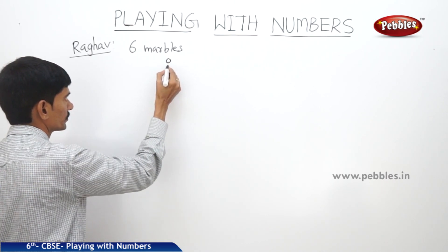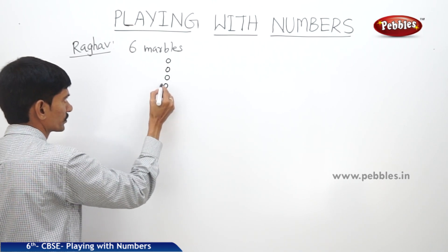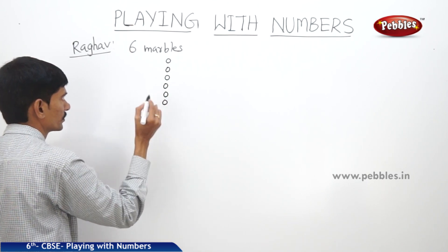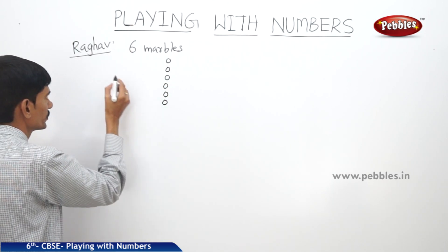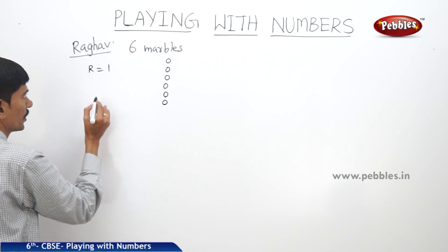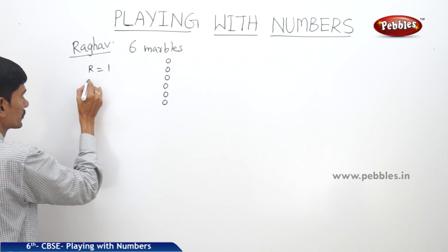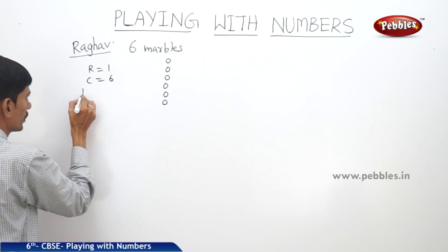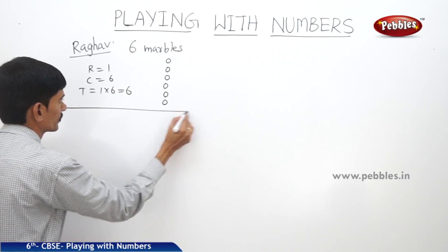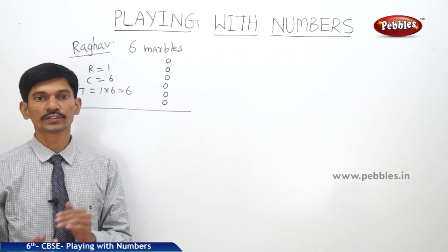In the first way, he arranges all the marbles in six rows with only one column: one, two, three, four, five, six. So the number of marbles in each row is one, and the number of marbles in each column is six. The total number of marbles equals one into six, which is six.